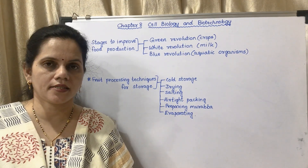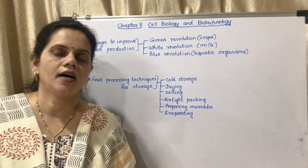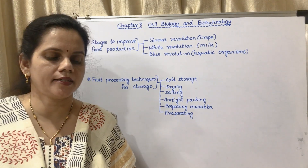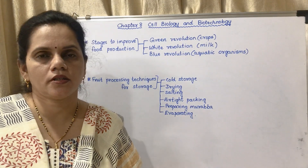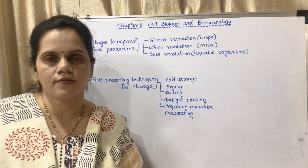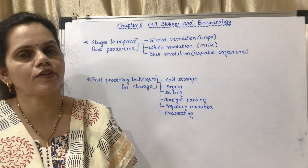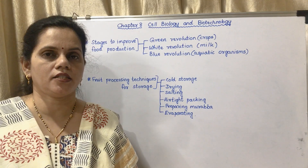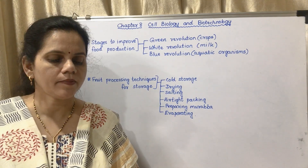AMUL stands for Anand Milk Union Limited. The next paragraph is about the milk we get from hybrid varieties of cows compared to country varieties — the desi cows.